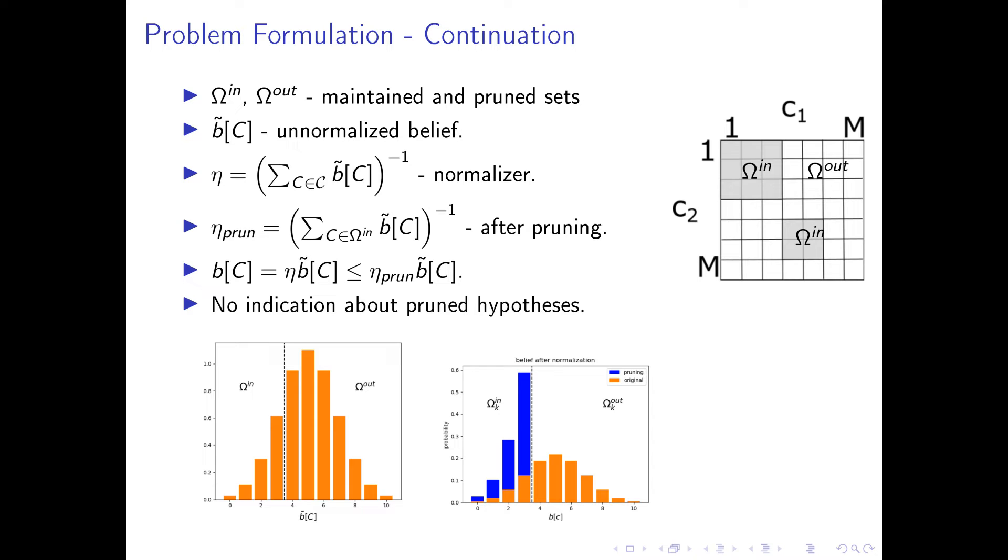Because this is very tedious, many times only the maintained hypotheses are considered. In order to keep a valid probability after pruning, each hypothesis gets a higher probability.